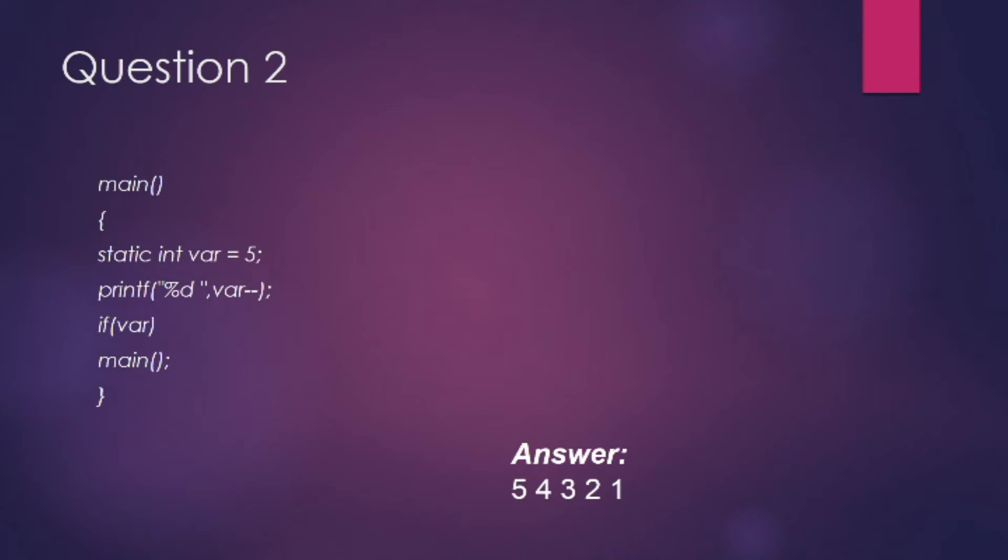When static storage class is given, it is initialized only once. The change in the value of a static variable is retained even between function calls. Here, main is also treated like any other ordinary function which can be called recursively. So main will get called again and again and it will print 5, 4, 3, 2, 1 as integer var is static.